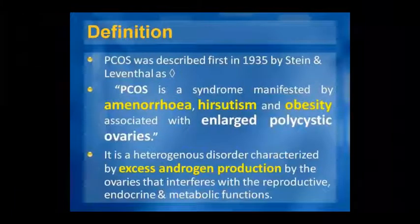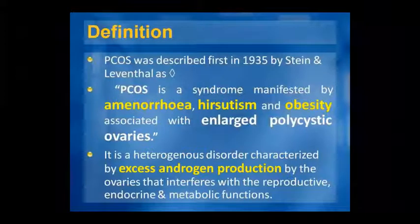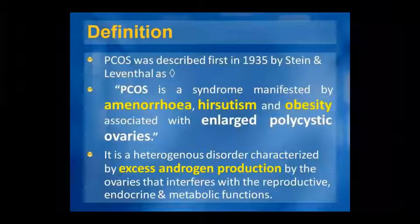Now, what is PCOS? In 1935, Stein and Leventhal described PCOS as a syndrome presenting with amenorrhea, hirsutism, and obesity, along with polycystic and enlarged ovaries.